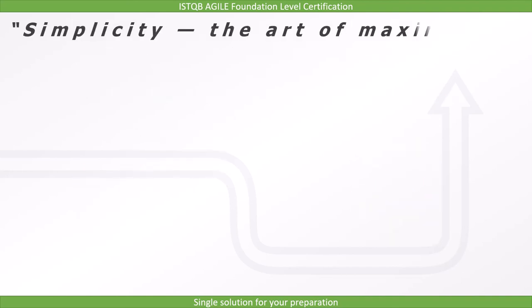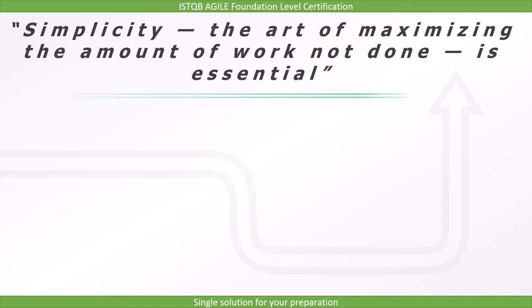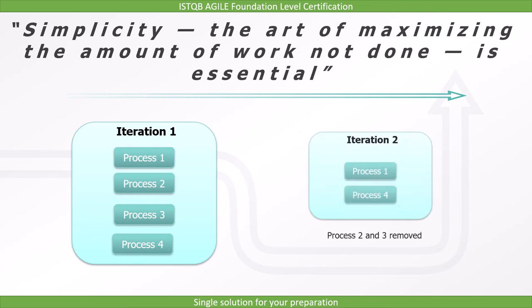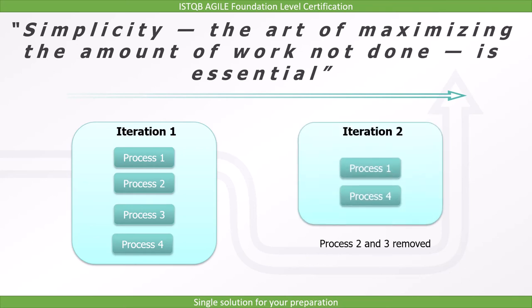The tenth principle is simplicity — the art of maximizing the amount of work not done is essential. This idea is central to eliminating waste. To make your progress more agile, do less. If you see that a certain process is no longer required, remove it. That way you don't have to follow processes that don't help in improving your product. This is called the art of maximizing the amount of work not done.